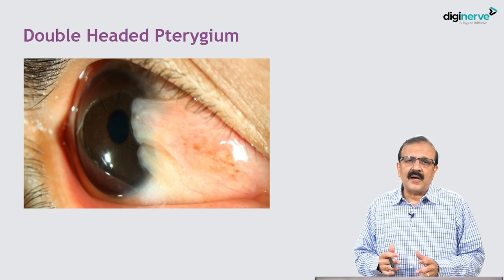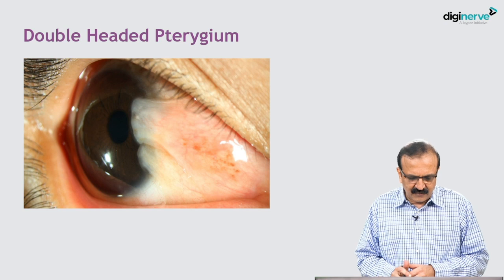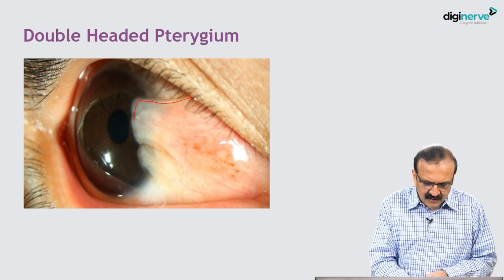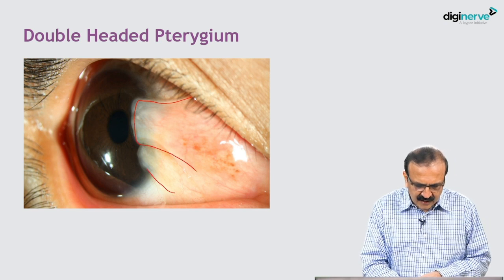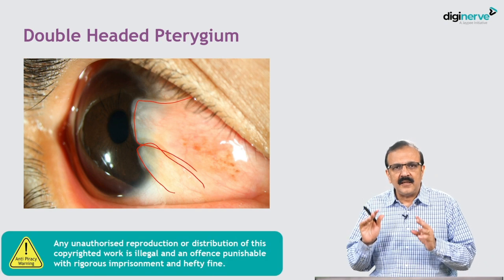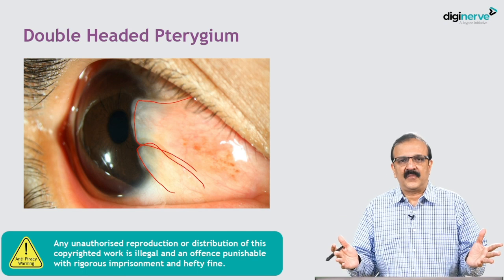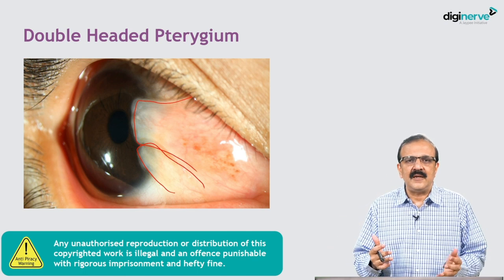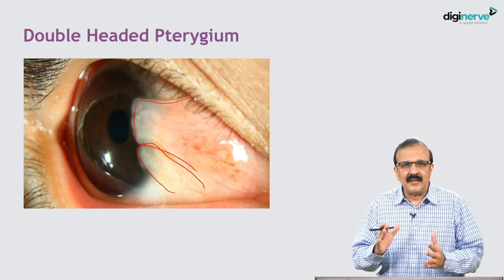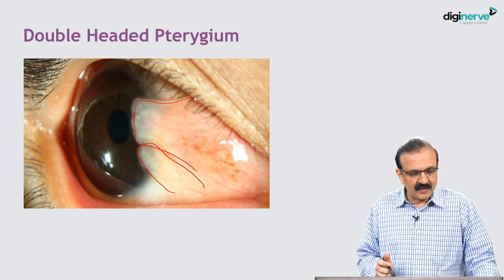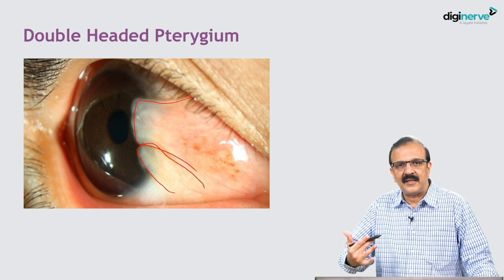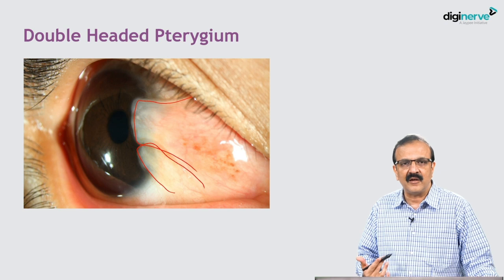We will also see some other variants in the morphology of pterygium. Here you see a nasal pterygium with two heads — one head and another head. You can have a single pterygium only on the nasal side but with two heads. When operating, you need to be cognizant of that fact and plan your surgical strategies accordingly. These are rare variants, but knowing them and describing them in exams can get you higher marks.